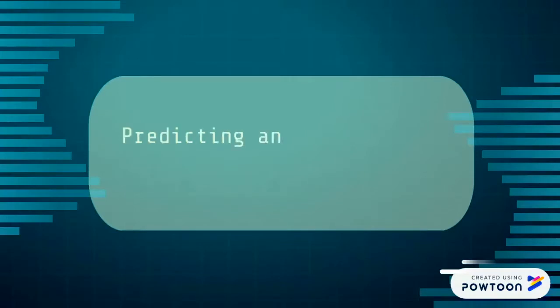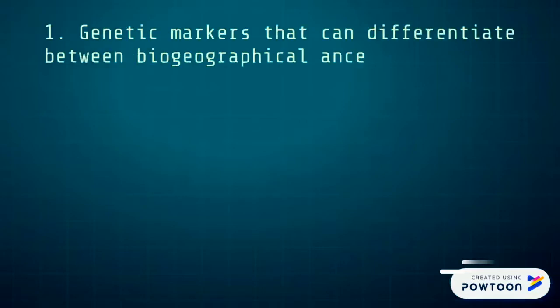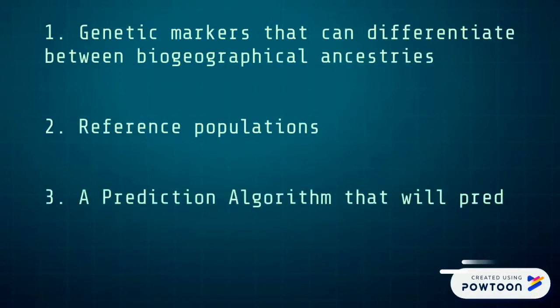To achieve the best possible prediction of an individual's biogeographical ancestry, you need three things: genetic markers that can differentiate between biogeographical ancestries, reference populations, and a prediction algorithm that will predict your donor's ancestry specific to genetic markers within the reference population.